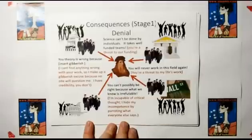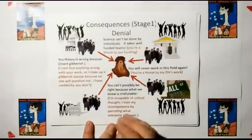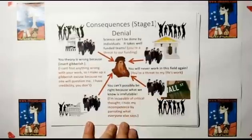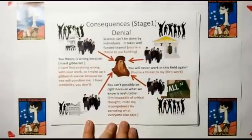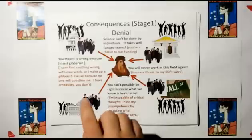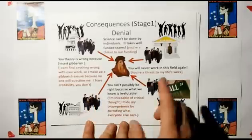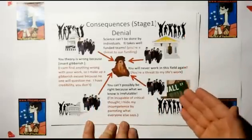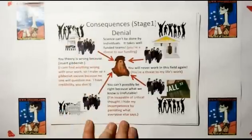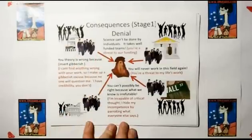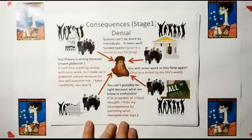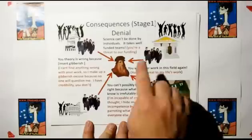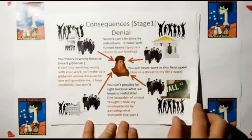I'm showing a picture of Galileo here. He becomes a threat to their credibility, and if he's a threat to their credibility, their ability to get loans, investments, and grants becomes a problem. Their livelihoods are in jeopardy, and the people that work for them — their livelihoods are in jeopardy. So there's going to be a denial stage.